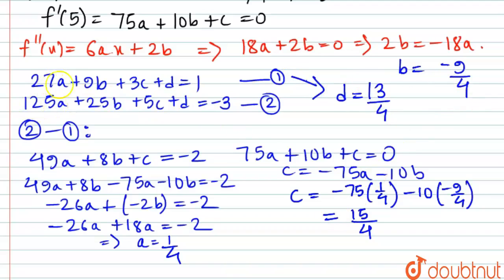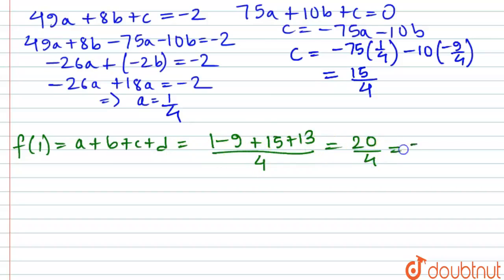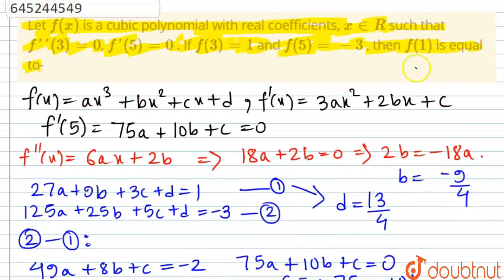Now we need to find f(1). So f(1) is basically the sum a + b + c + d, which is 1 - 9 + 15 + 13 upon 4, which is basically 20/4, which is finally 5. That is the value of f(1), 5, f(1) = 5.